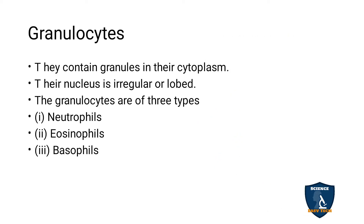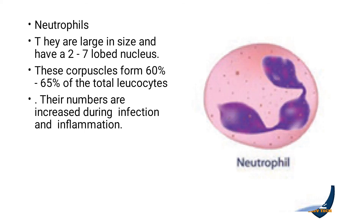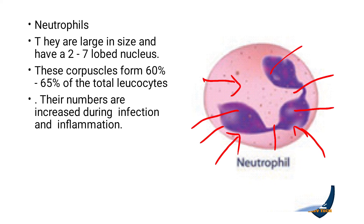Neutrophils have a two to seven lobed nucleus and form 60 to 65 percent of total leukocytes. Their number increases during infection and inflammation. Eosinophils are two-lobed and constitute 2 to 3 percent of total leukocytes. Their number increases during allergy and parasitic infections, and they bring about detoxification of toxins.